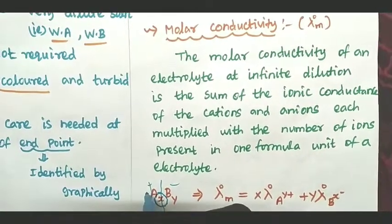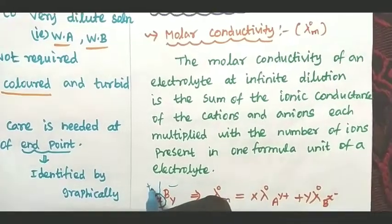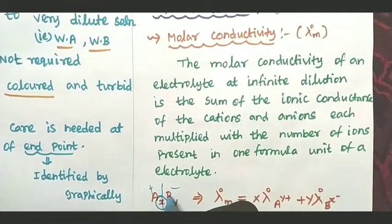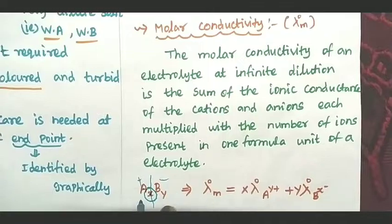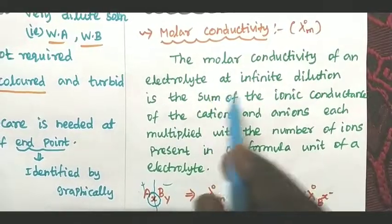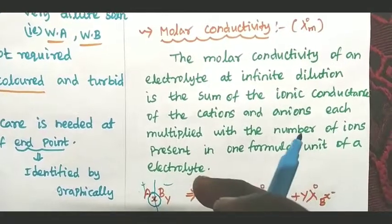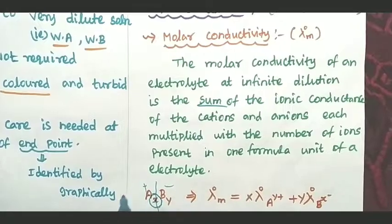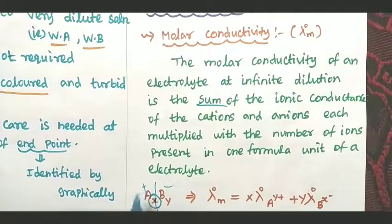Here is the stoichiometry of the ions. Y is the charge and X is the charge. The first is a plus charge and the second is a minus charge. Y is the number of ions (B) and X is the number of ions (A). So here is the concept of ionic conductance of the cation and anion.